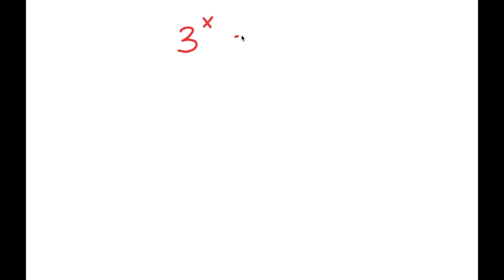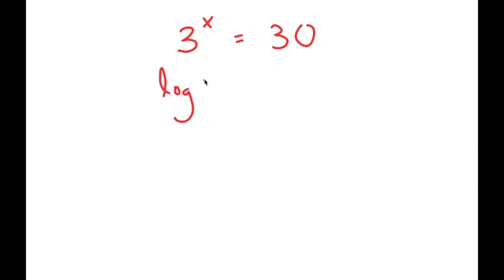In this video, I'm going to solve the equation 3 to the power of x is equal to 30. To solve this equation, I'm going to start by taking the log on both sides. So I get log of 3 to the power of x is equal to log of 30.